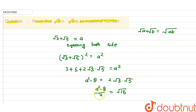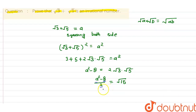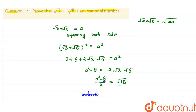Now, in the given expression, we assumed a is a rational number. Here 8 is also a rational number and 2 is also a rational number. So the left-hand side, (a² − 8)/2, is a rational number. But on the right-hand side we have √15, and √15 is an irrational number. A rational number cannot be equal to an irrational number.